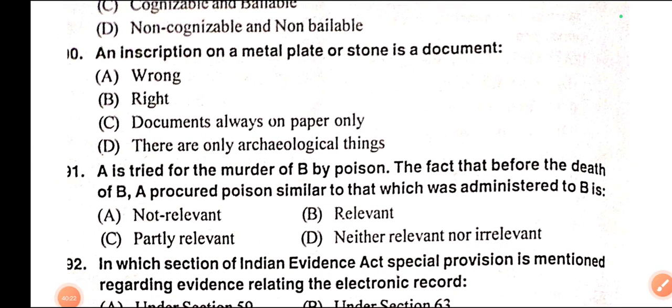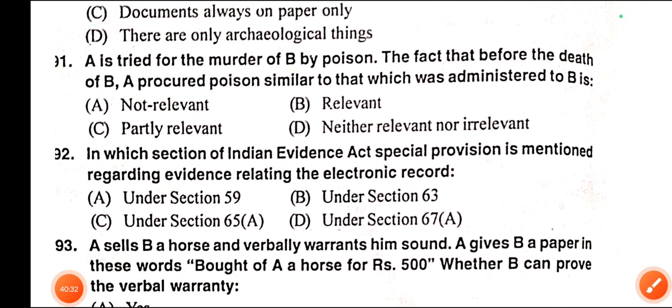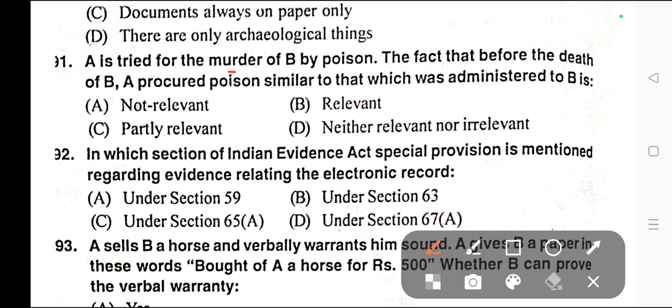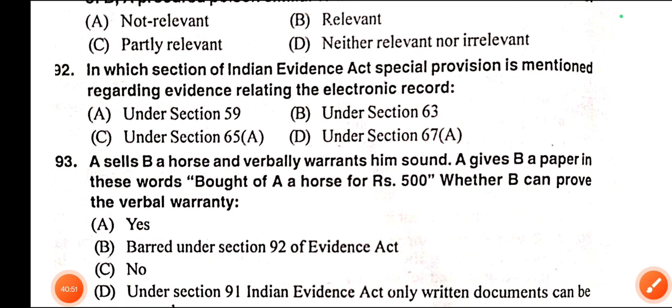Question number ninety: An inscription on a metal plate or stone is a document. Correct answer is option B — Right, it is a document. Question number ninety-one: A is tried for the murder of B by poison. The fact that before the death of B, A procured poison similar to that which was administered to B — is — A) Non-relevant, B) Relevant, C) Partly relevant, D) Neither relevant nor irrelevant. Correct answer is option B — Relevant.